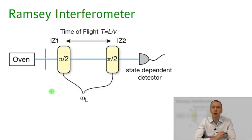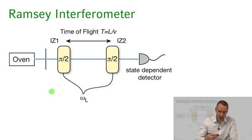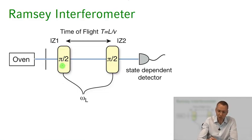What he actually thought of was to realize a so-called separated oscillatory field method — that's what he called the Ramsey interferometer. The setup has an oven emitting particles in the ground state, followed by a first interaction zone where we apply a resonant pi-over-2 pulse to the atoms.